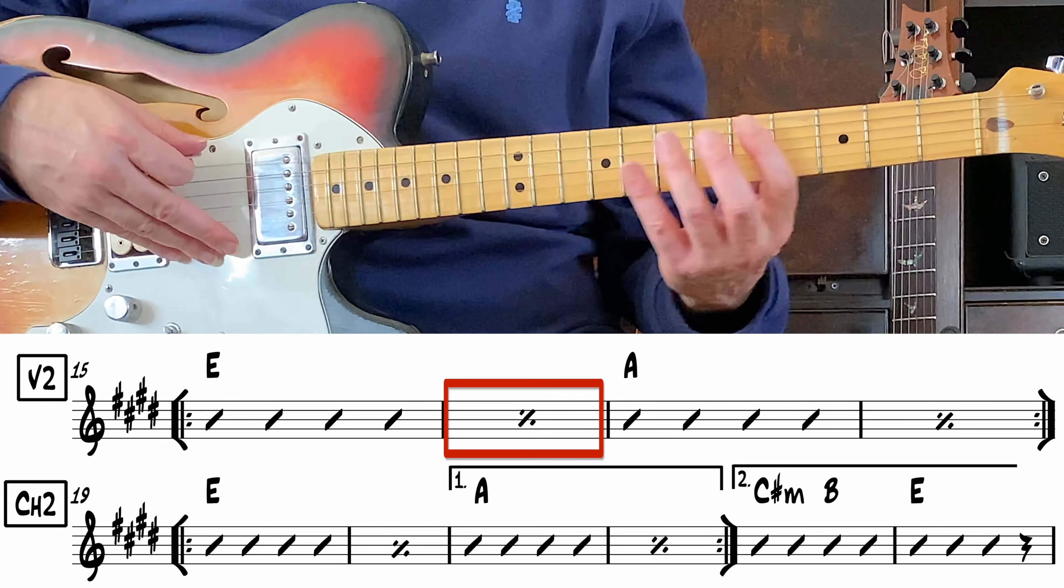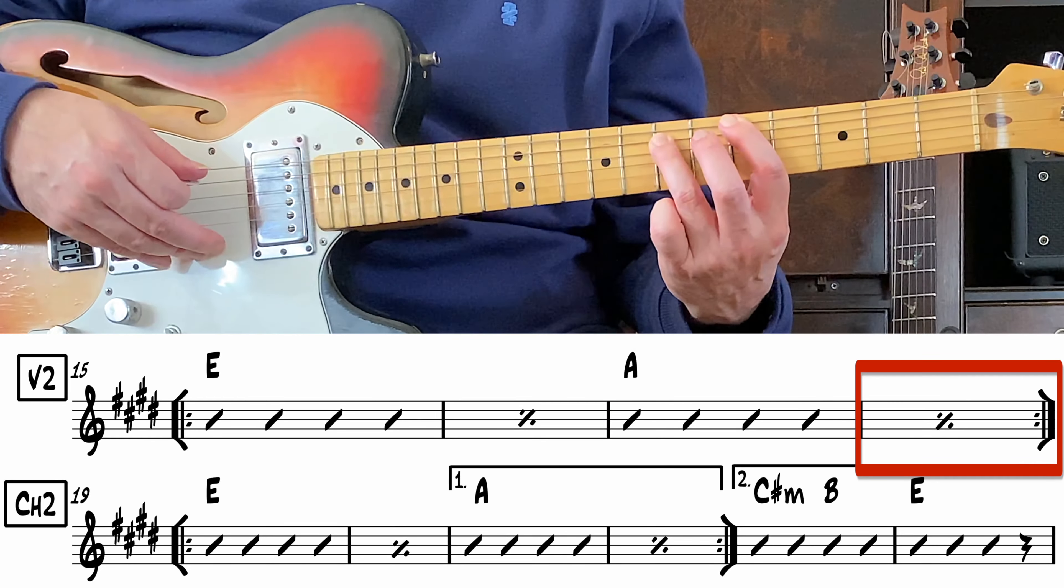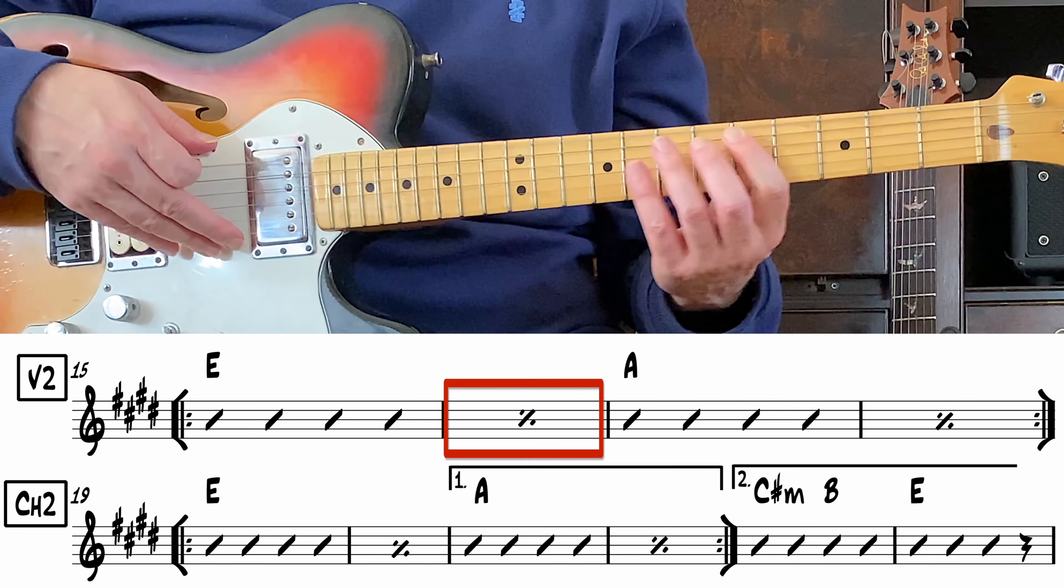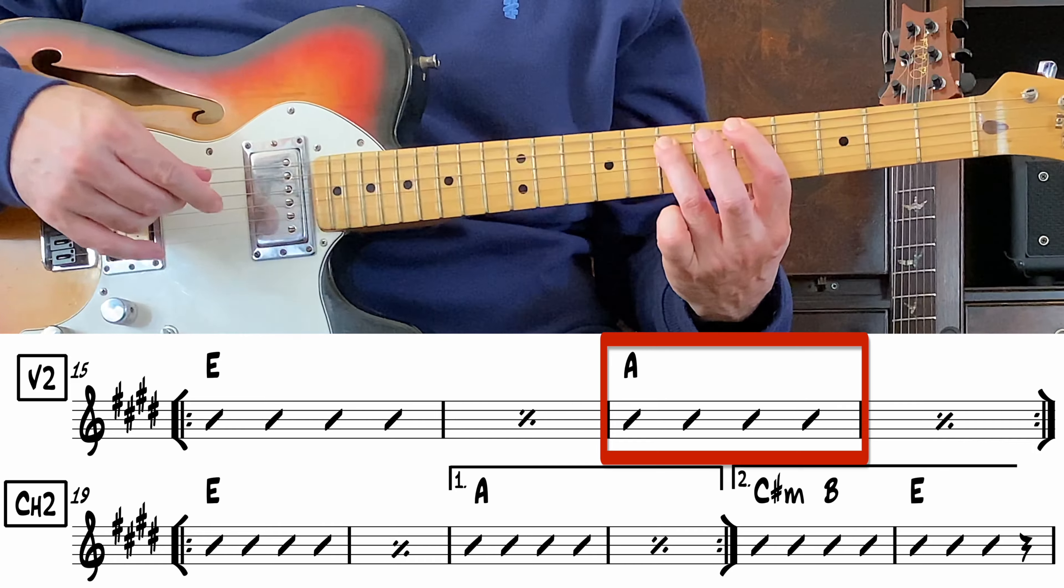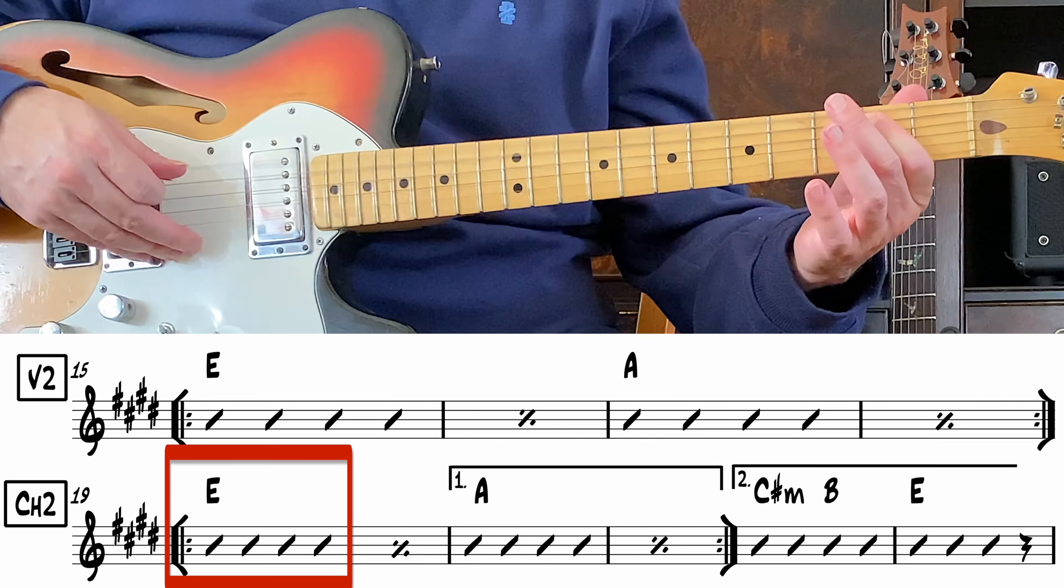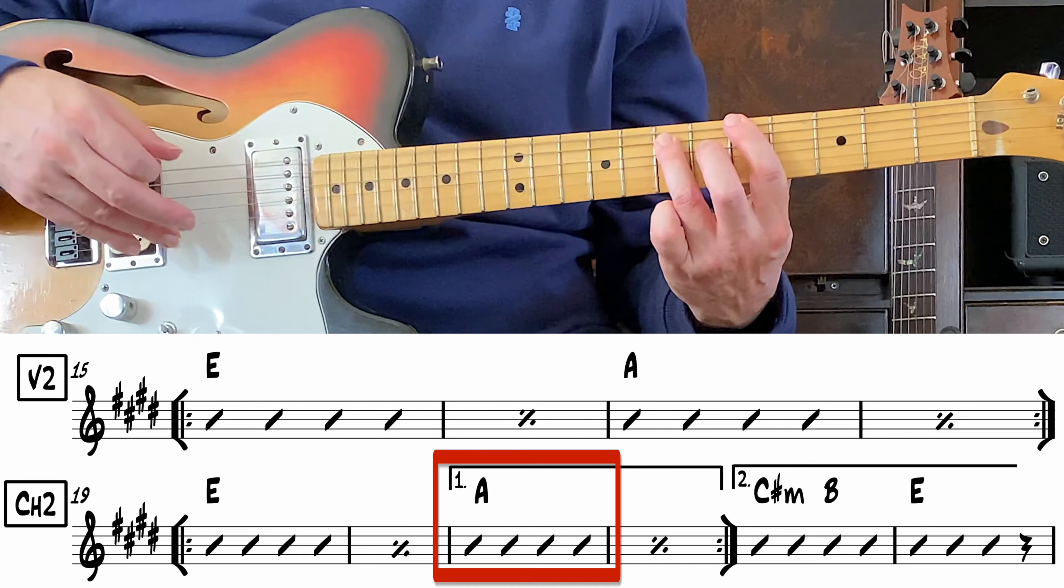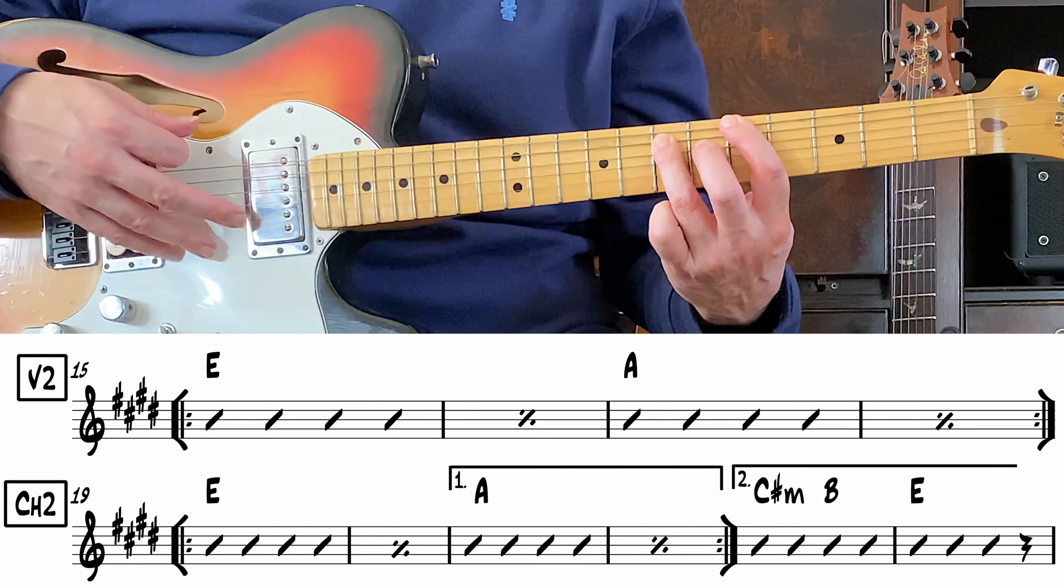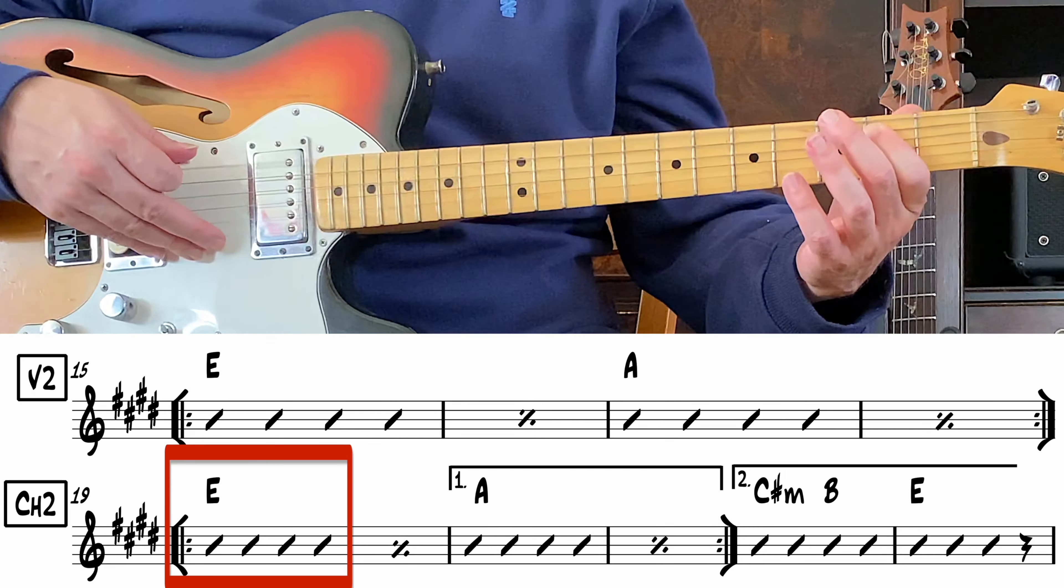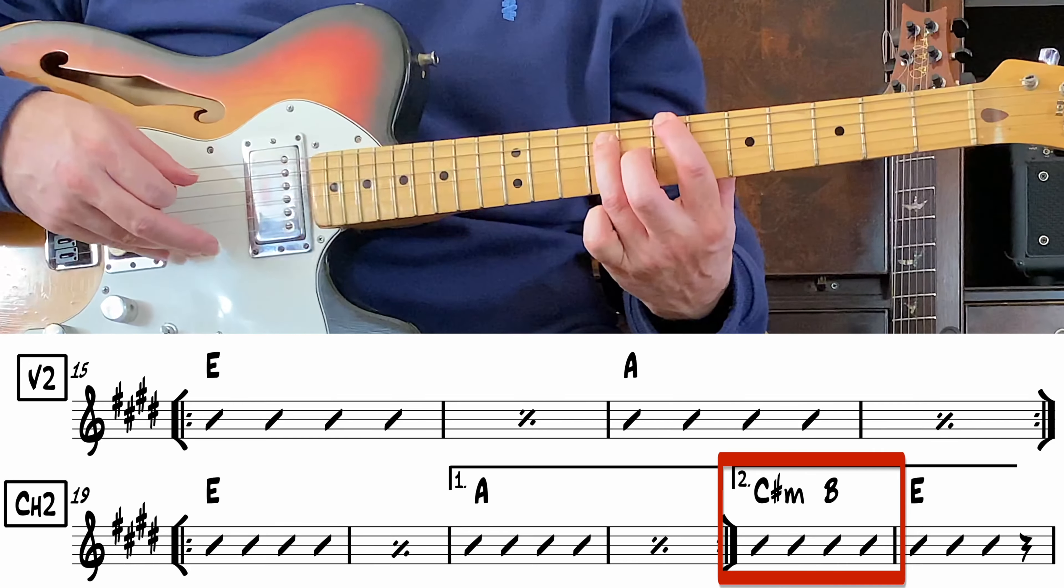Up there. Up to A. Here we go. Back to E. Here comes C-Sharp. Down to B. E.